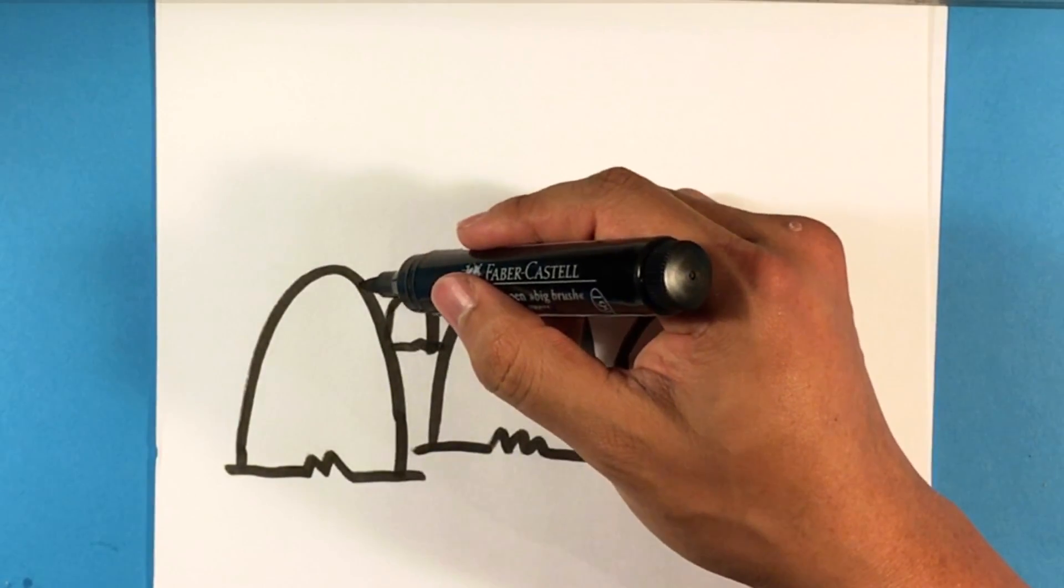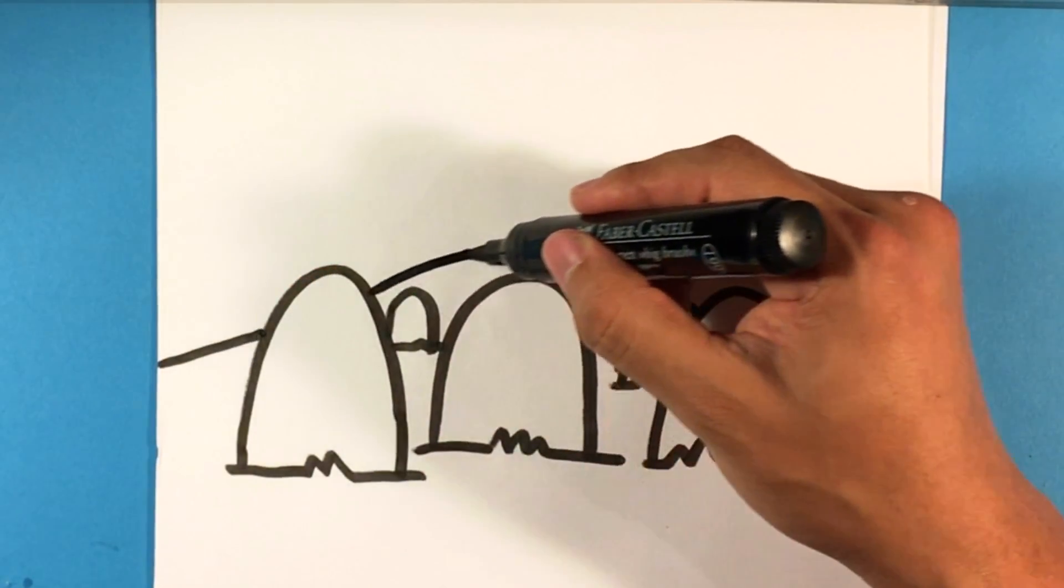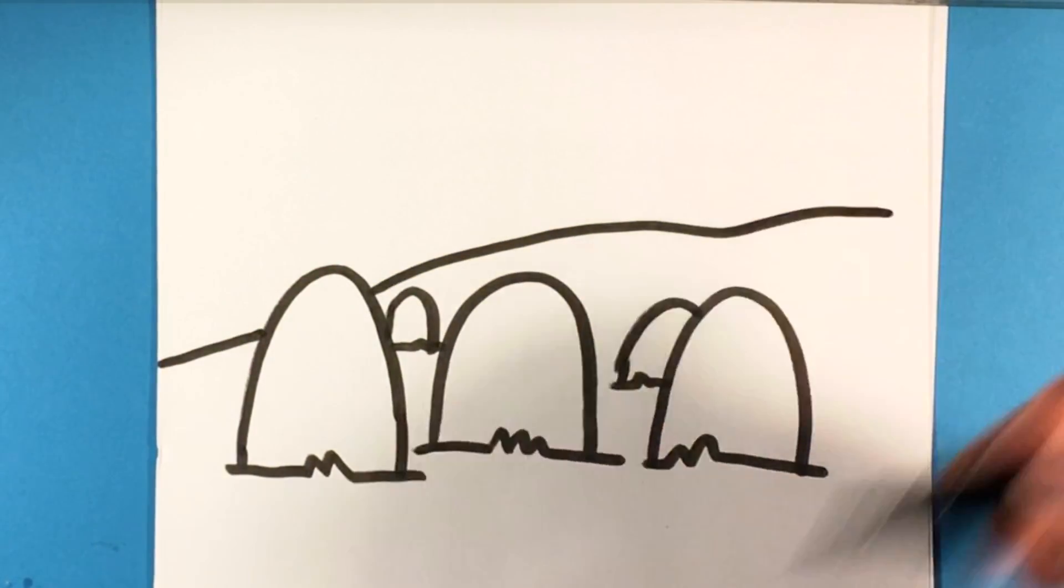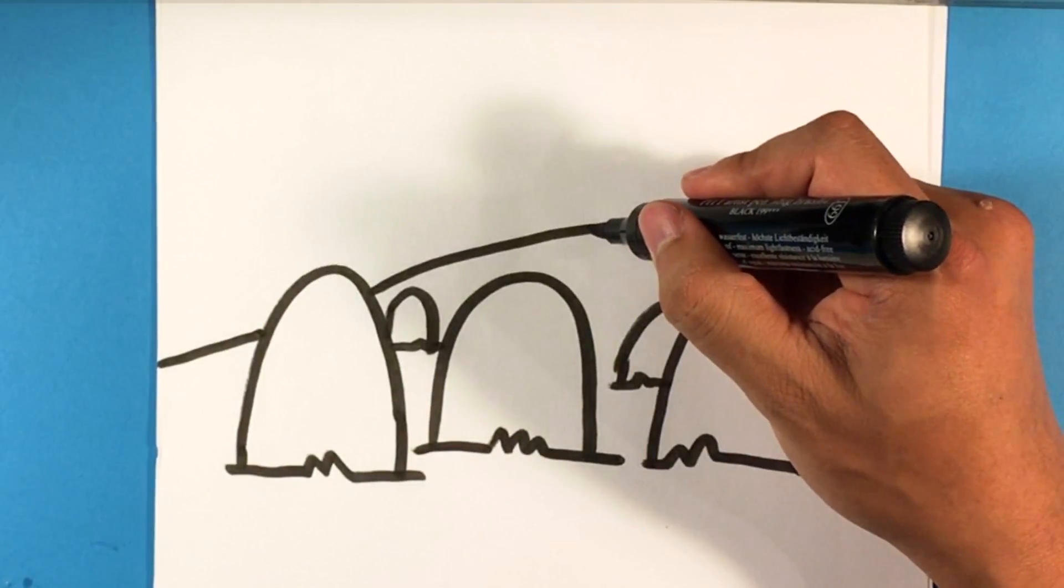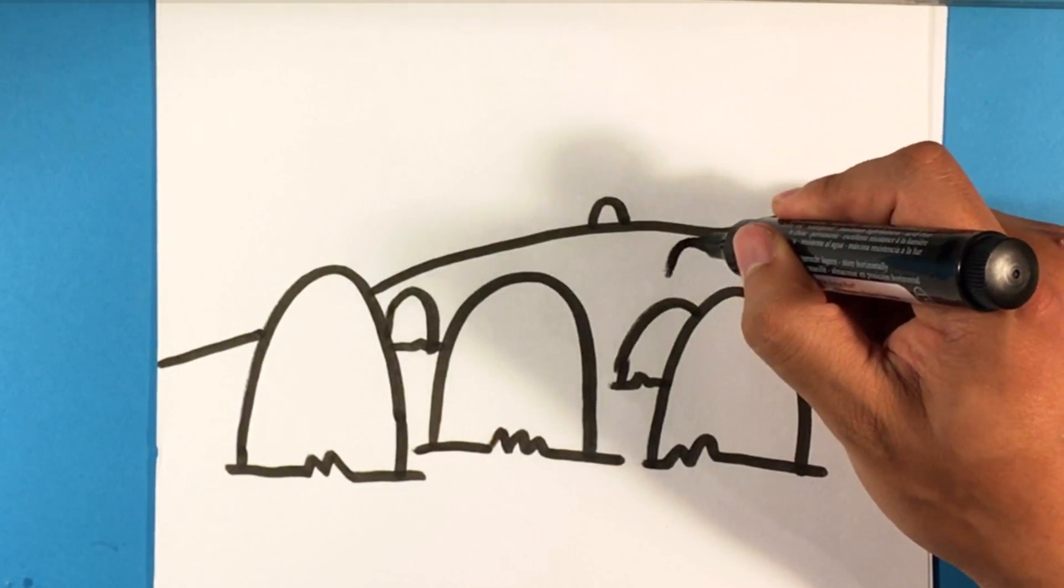And if you want, you can draw a hill like a large hill, and on top of those you can draw other smaller gravestones.